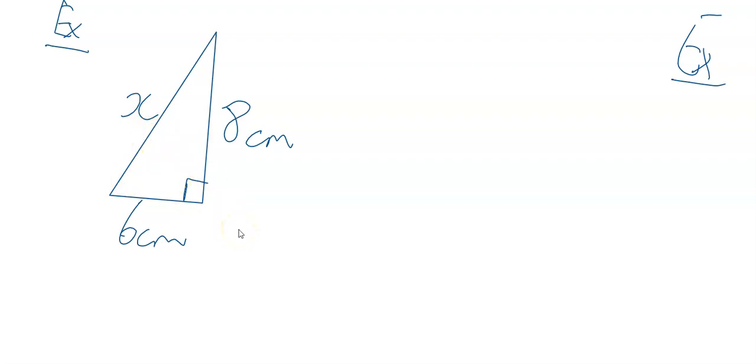By Pythagoras' Theorem, which can be written in lots of different ways - sometimes it's written c² = a² + b², sometimes a² = b² + c². It doesn't matter as long as you realize that c is the hypotenuse. I'm going to use c² = a² + b².